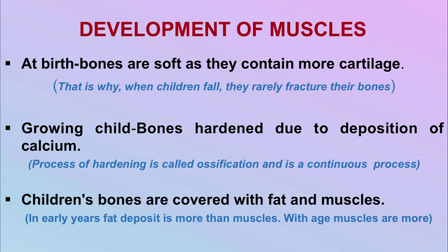Now let's look at the development of muscles. At birth, bones are very soft as they contain more cartilage, and that is why when children fall they rarely fracture their bones. As the child grows, bones are hardened due to the deposition of calcium — this process of hardening is called ossification, and it is a continuous process. Children's bones are covered with fat and muscles. In early years, fat deposit is more than muscle, and with age the muscles develop more.